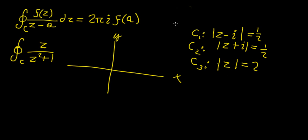Recall from earlier videos on plotting regions of the complex plane that these are circles. C1 is centered at the point i (which corresponds to 1 on the imaginary axis) and has radius 1/2. Similarly, C2 is centered at -i and also has radius 1/2.